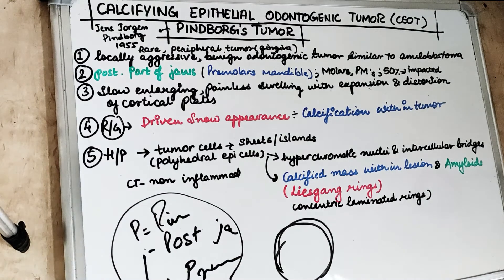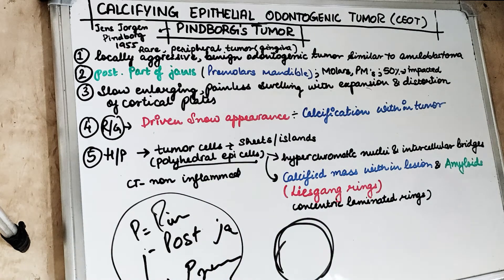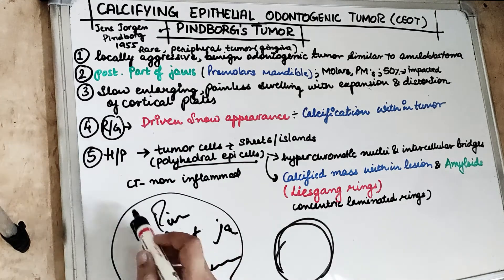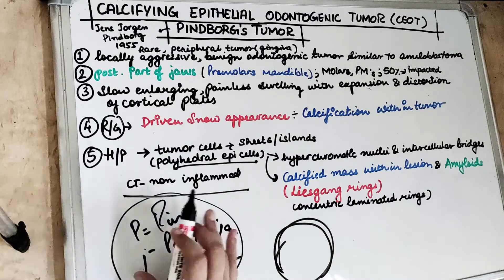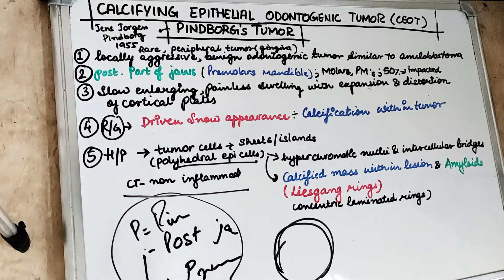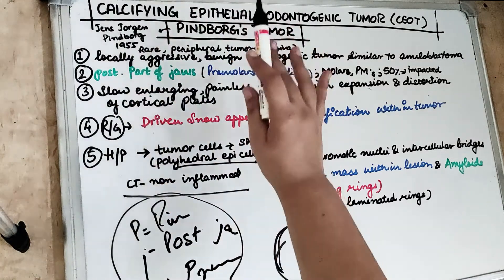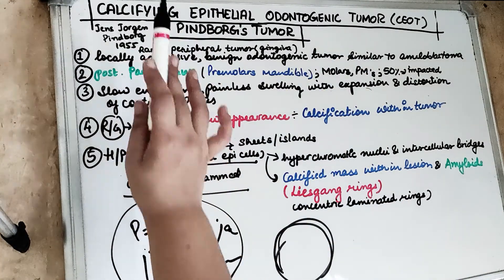Histopathologically, on cross section, the tumour cells are polyhedral epithelial cells arranged in sheets or islands. They can also show a cribriform appearance. These cells are placed within non-inflammatory connective tissue — meaning the connective tissue does not contain inflammatory cells in CEOT. There is also calcification present within the epithelial component.